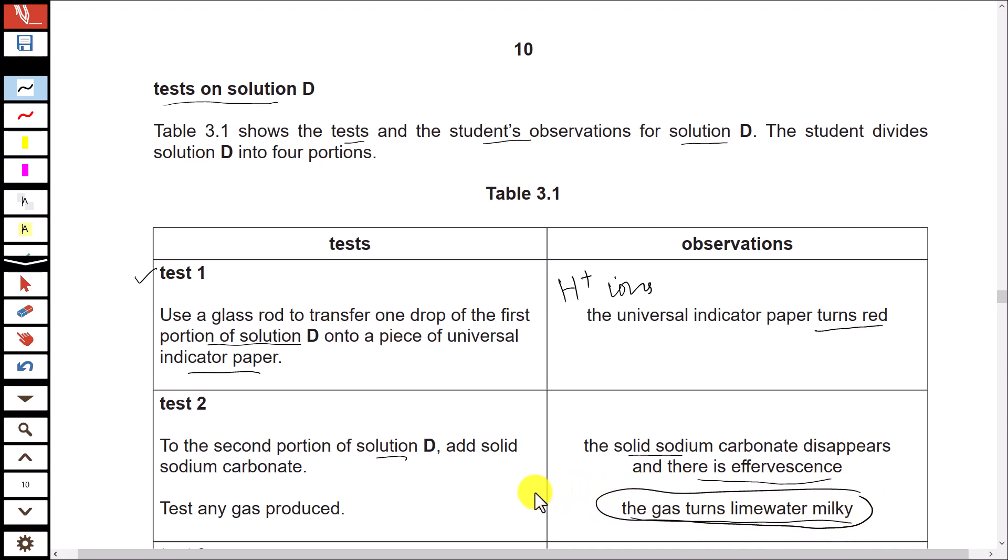And this test again is confirming the presence of an acid, because when acid reacts with carbonate, carbon dioxide gas is produced. And when this carbon dioxide gas is tested using limewater, it turns limewater milky.